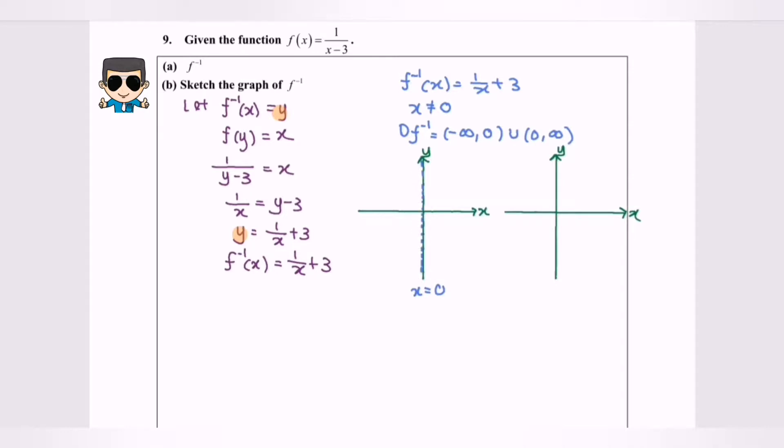Referring to the graph y equals 1 over x, the coefficient for x is positive, so our graph will be towards the right hand side. As we know, the graph does not touch the x-axis or y equals 0, so this is a horizontal asymptote where y equals 0. Next, the equation is y equals 1 over x plus 3.